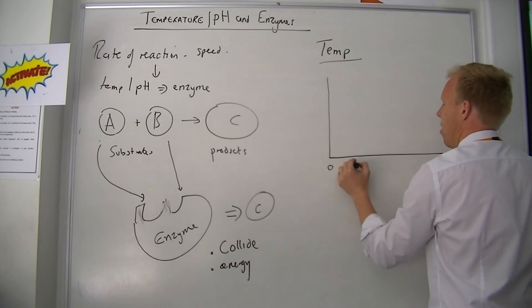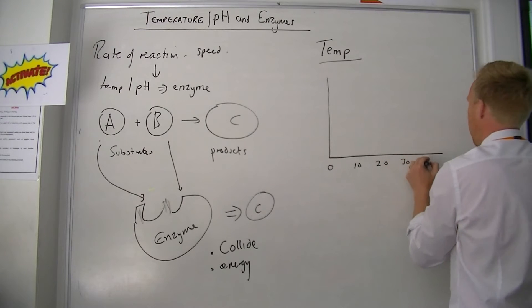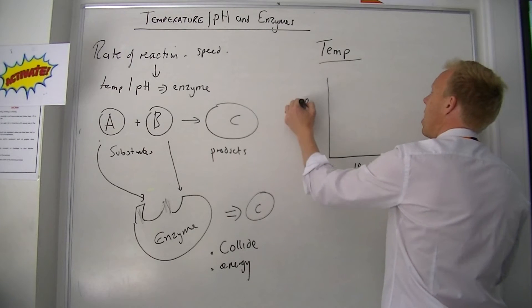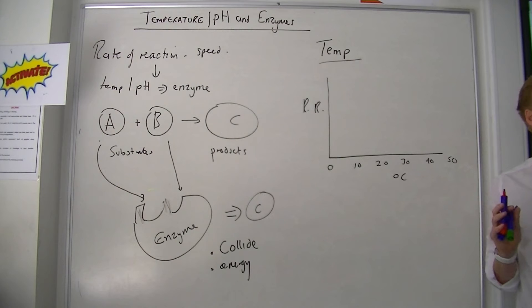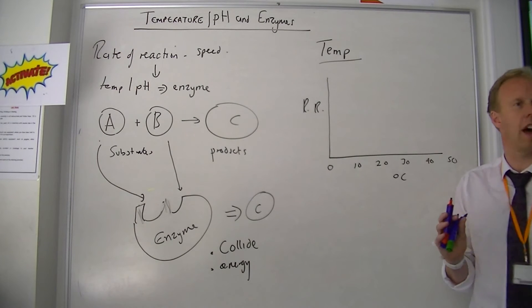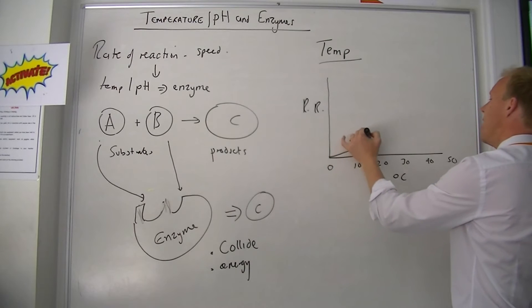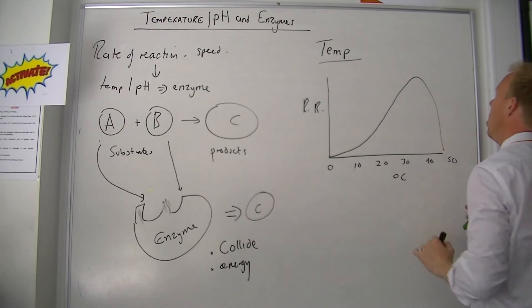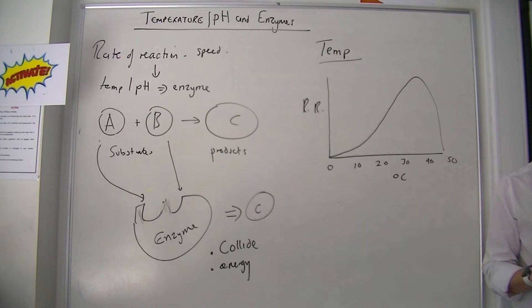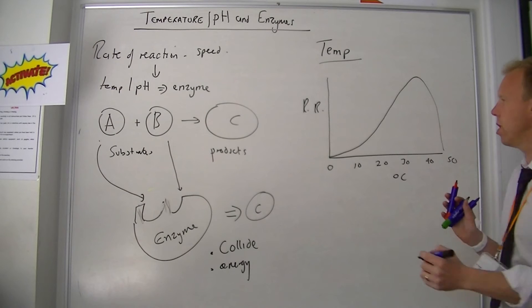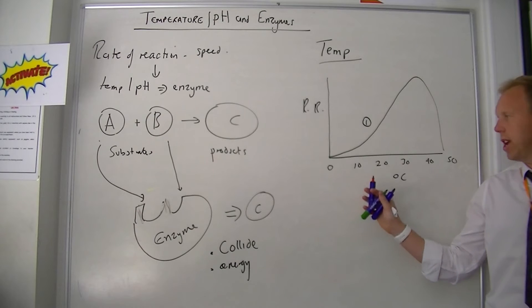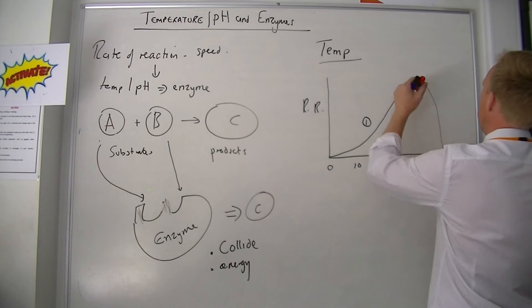We'll call this 0, 10, 20, 30, 40, and 50 degrees C, and up here we'll call this rate of reaction, how fast it occurs. And the reaction goes like this: it gets faster as you increase temperature until it reaches a point, then the reaction stops. Now this is a massive concept and you need to understand why it gets faster at the start as you increase temperature, but when you reach a certain point the reaction stops happening almost instantly.